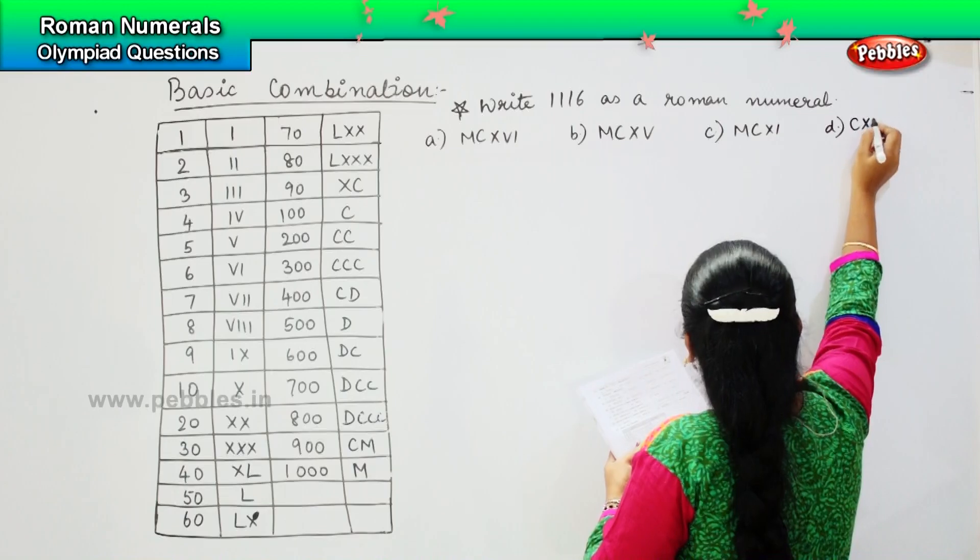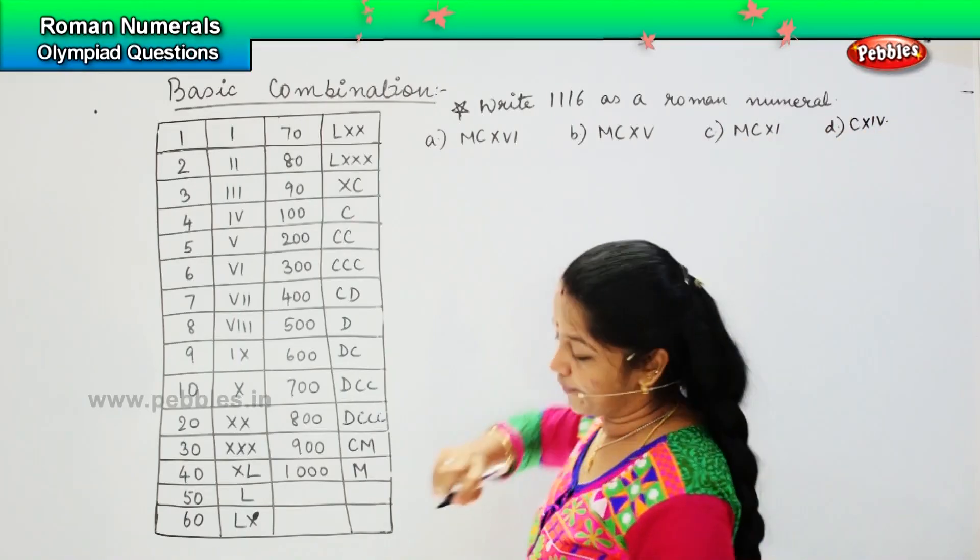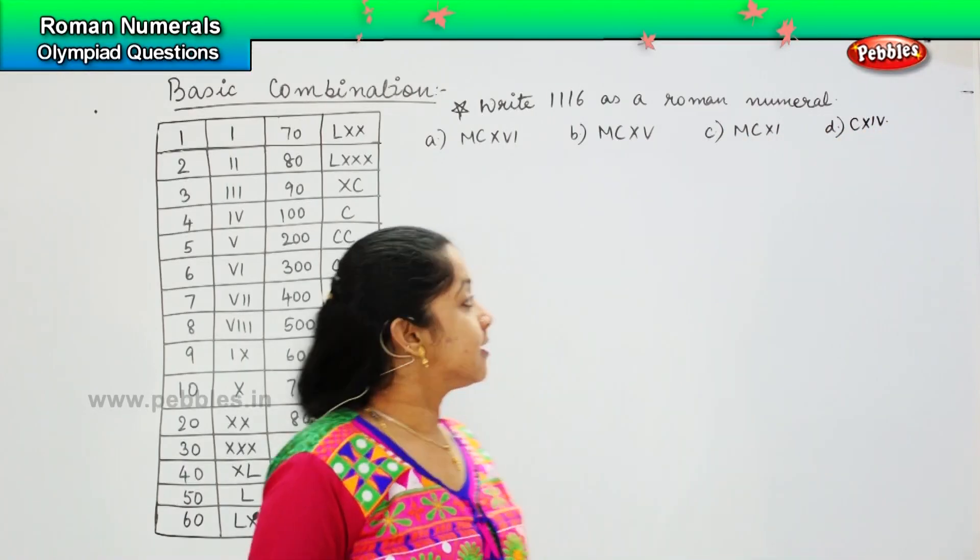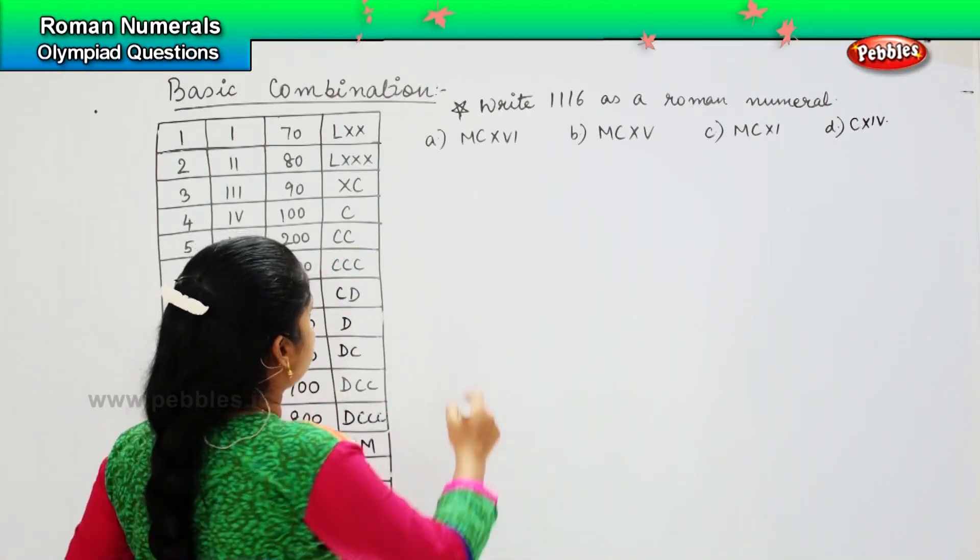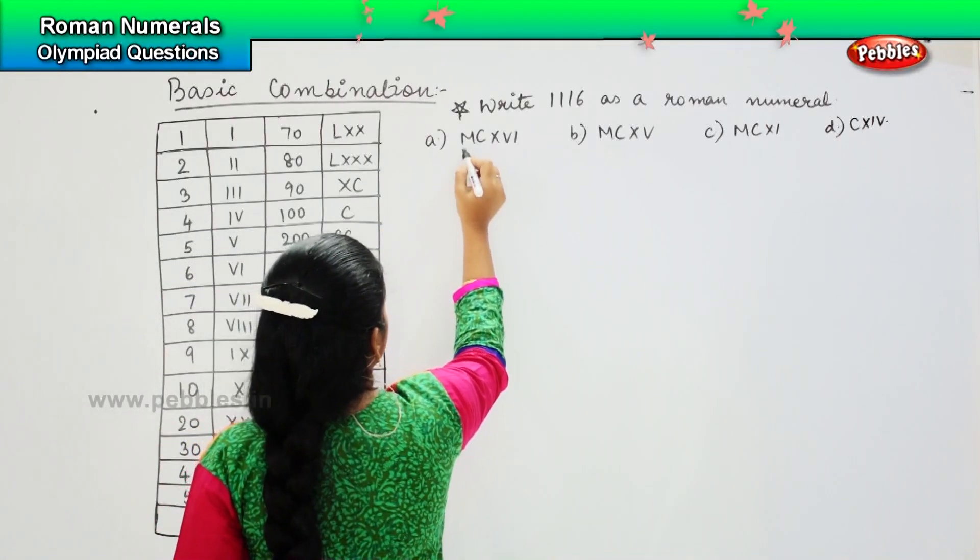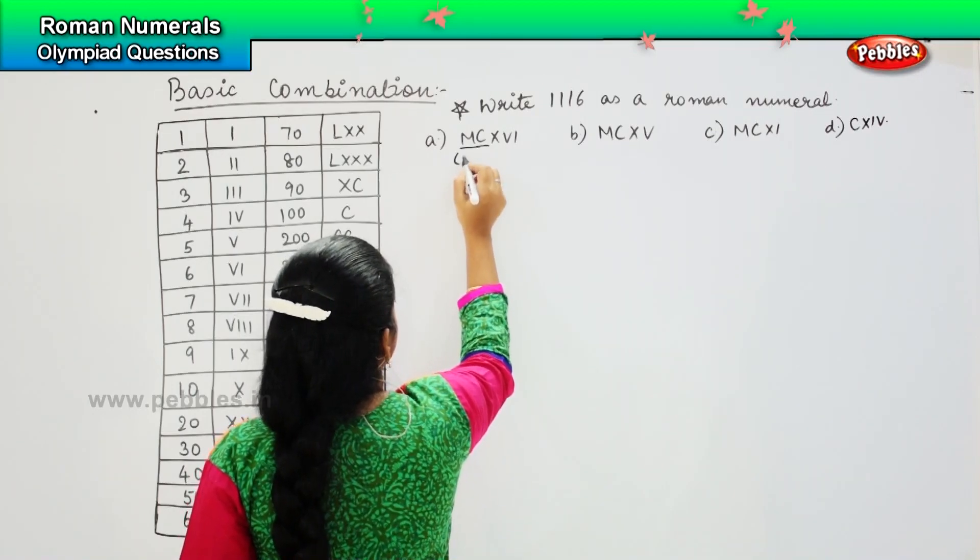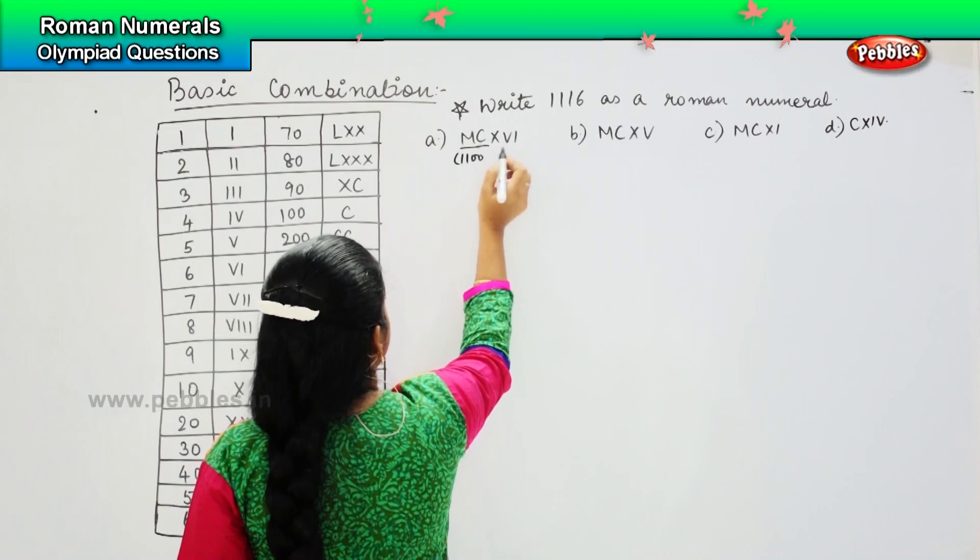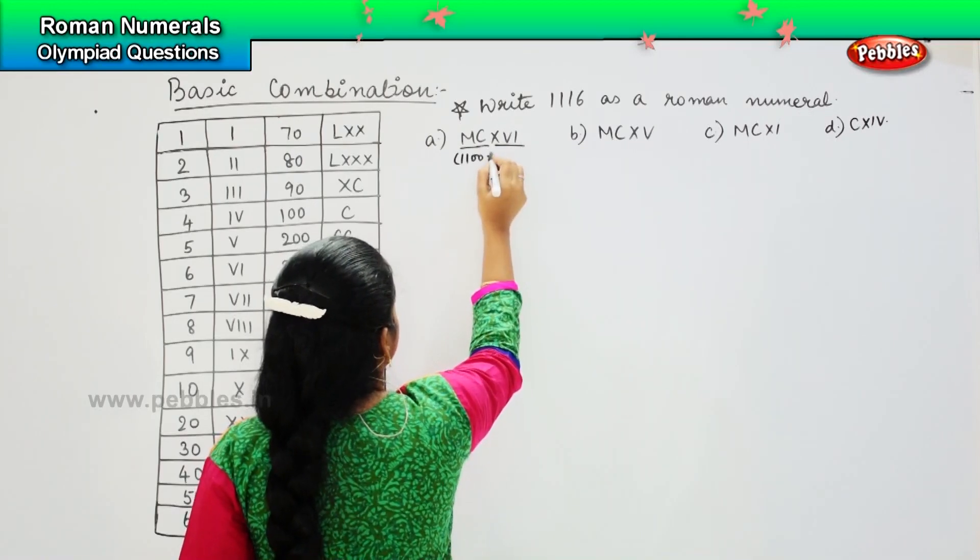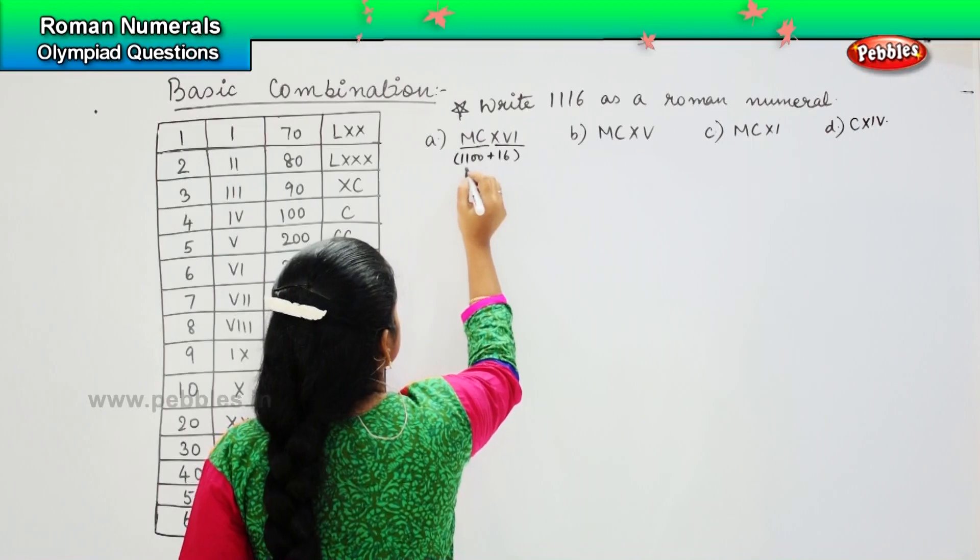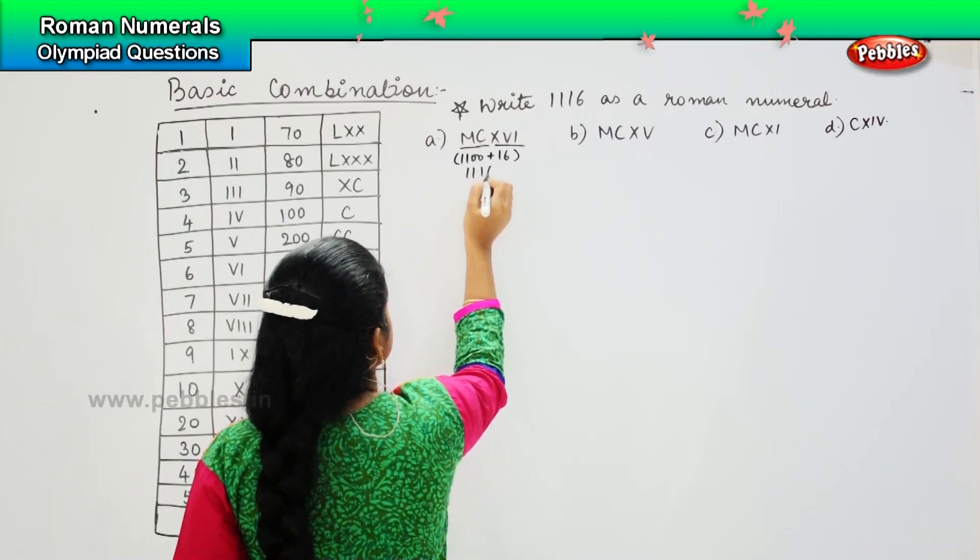Okay, so let us try to solve. MCXVI - you know M is thousand, so MC is thousand hundred, XVI is sixteen. So this is 1116.